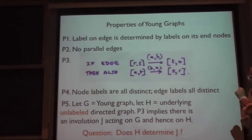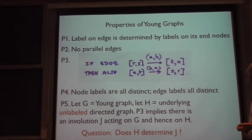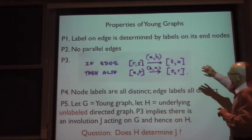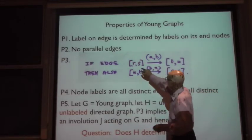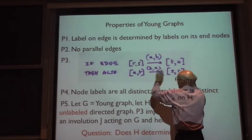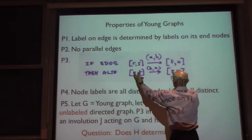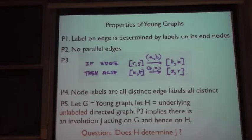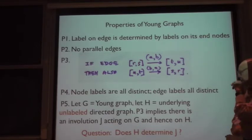And my last slide is some general marks about properties of young graphs. The label on an edge is determined by the labels on the nodes. There are no parallel edges between any two nodes. There's at most one edge. A really nice property is that if you have an edge going from a node RS to a node TU, then there's also an edge that goes from the reverse of the node, the nodes, with a label which is the numbers of the edges. This is a very useful property. And from that you can prove that all the node labels are distinct, the edge labels are distinct.